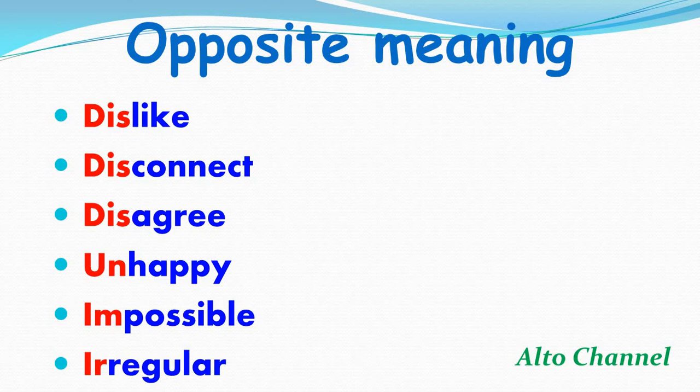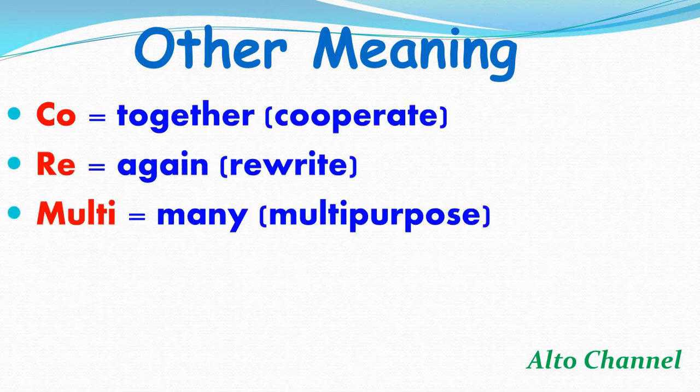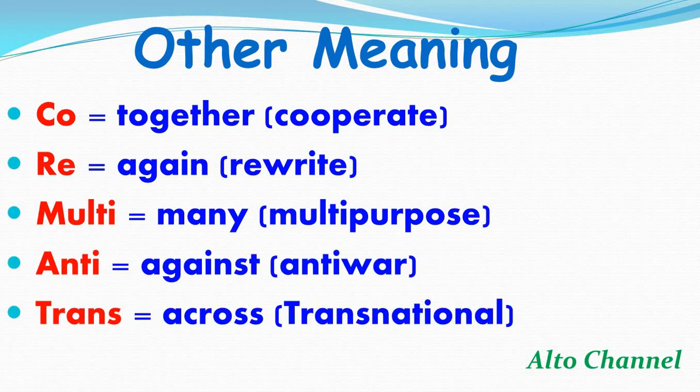And then the last example is 'regular'. The meaning of 'irregular' is not regular. And then the next prefix meaning is 'co', which means together. For example, 'cooperate' — 'operate' means to work, so if you add 'co', it becomes 'cooperate', meaning work together.